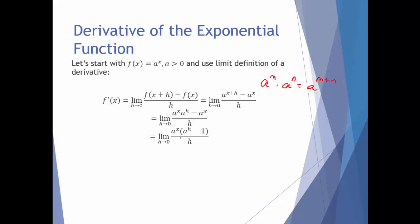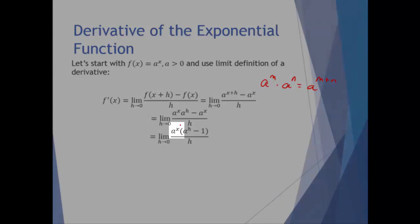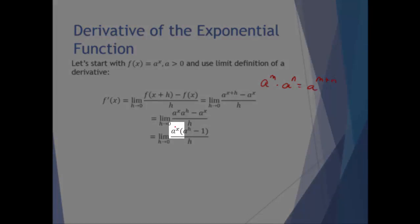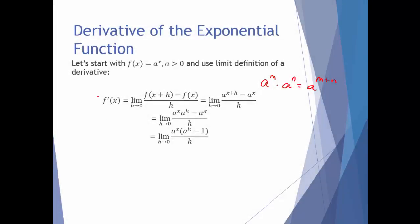The reason we're interested in this is that according to this limit, the thing approaching 0 is h. So h is the variable here, which means a to the x is essentially a constant according to the limit — not a constant according to the derivative itself, but it acts as one in this limit. According to limit laws, anything that acts like a constant can be pulled out front.